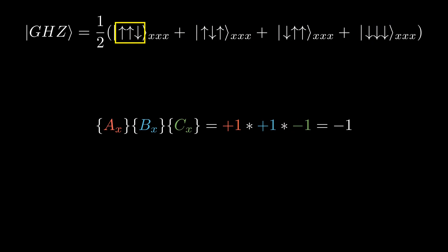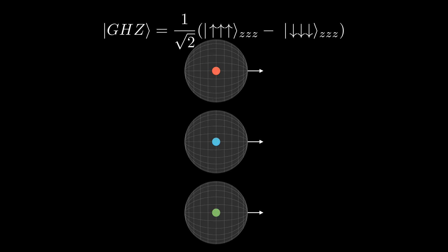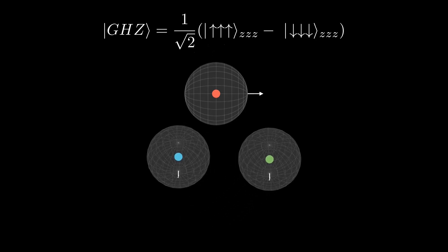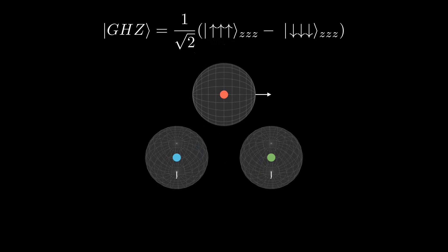To get our second equation, let's now change the orientation of the detectors, where particle A is still being measured in X, but now particles B and C are going to be measured in Y.